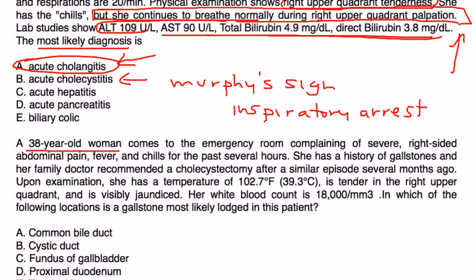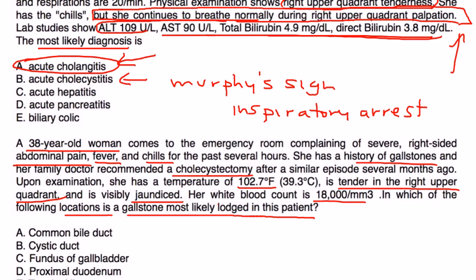And finally, a 38-year-old woman comes to the emergency room with severe right-sided abdominal pain, fever, chills. She has a history of gallstones, and her family doctor recommended a cholecystectomy after a similar episode several months ago. Upon exam, she has a temperature of 102 Fahrenheit, and is tender in the right upper quadrant, and visibly jaundiced. White cell count is 18,000. In which of the following locations is the gallstone most likely lodged? Well, I won't draw the diagram again, but if you remember, the common bile duct is where the stone is in a case of choledocholithiasis that later progresses to cause cholangitis, which is what she has. So the answer for this is choice A. Thank you.